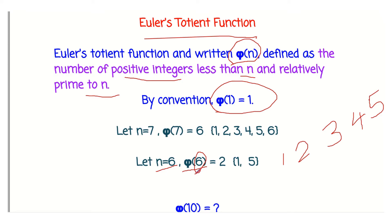Let us take n = 6 as an example. We check which integers are relatively prime to 6. Starting with 1: the GCD of 1 and 6 is 1, so 1 is relatively prime to 6. So 1 counts for φ(n).